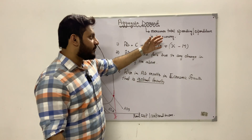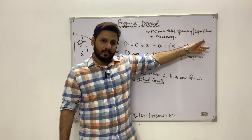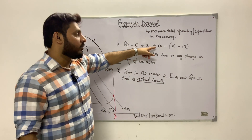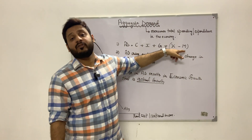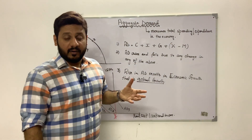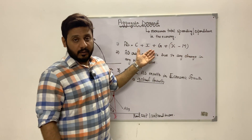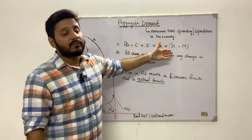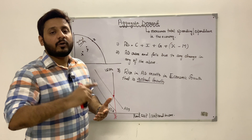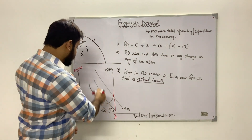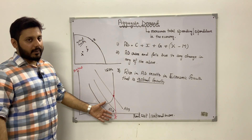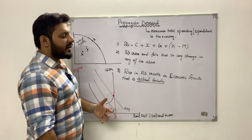If either consumer spending, investments, government expenditure, or net exports increases, that will result in an increase in aggregate demand. That will cause a rightward shift — an outward shift — in our aggregate demand curve. As for the aggregate demand curve itself, I'm going to be discussing and breaking down why it slopes downwards in my next video.